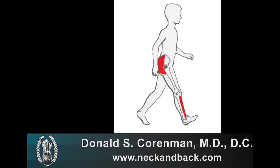Once the heel hits the ground, the leg on the ground needs to propel the body forward. This propulsion is performed by the gluteus maximus muscle group — an L5-S1 innervated group — and the hamstring muscle group innervated by the S1 nerve. Contraction of these muscles propels the body forward by pulling the hip joint backward, extending the hip where the foot contacts the ground, as illustrated by the gluteus maximus here. The hamstring also contributes.